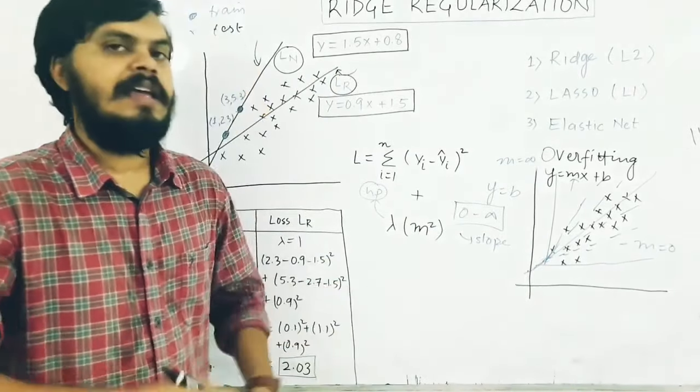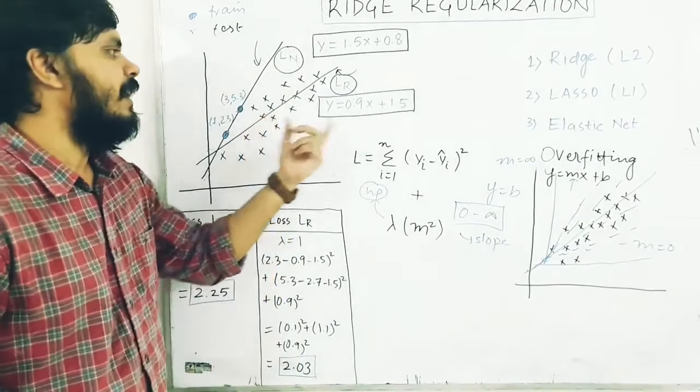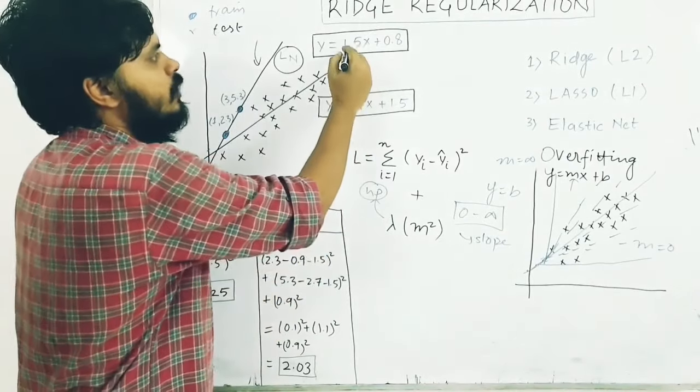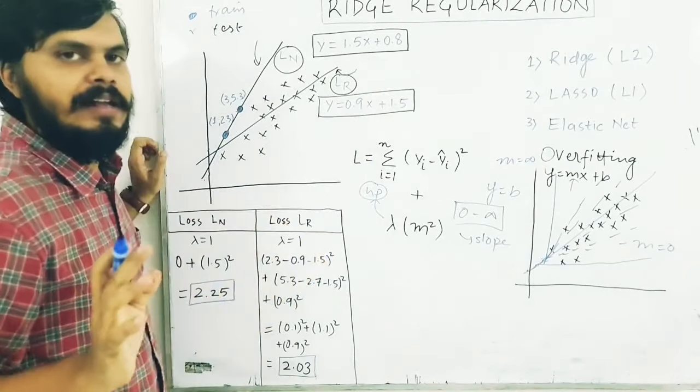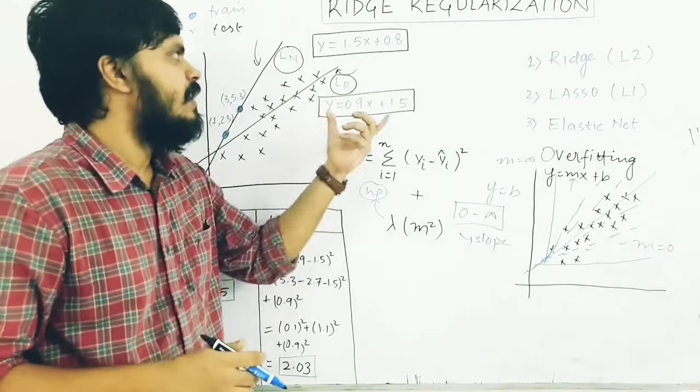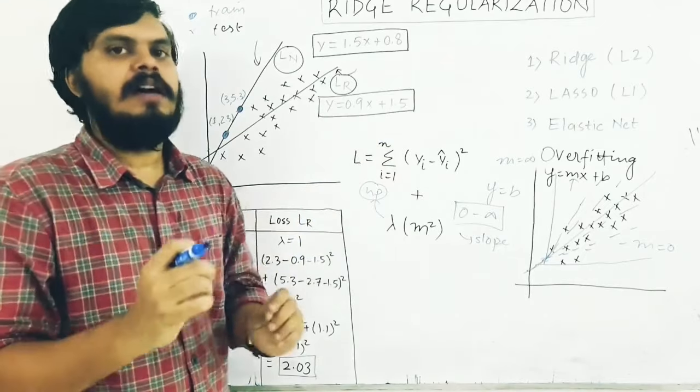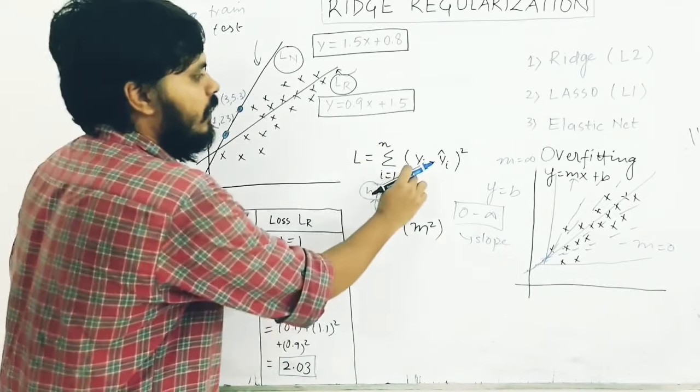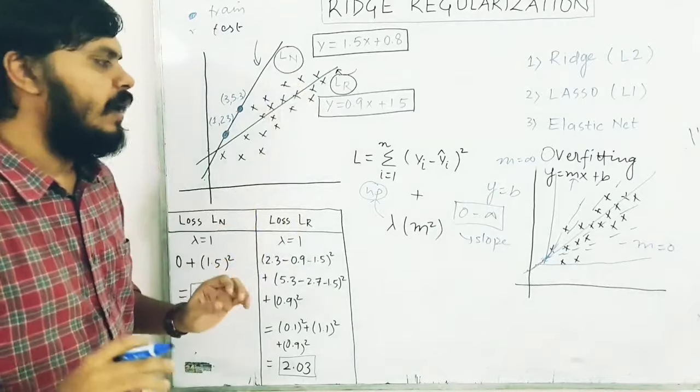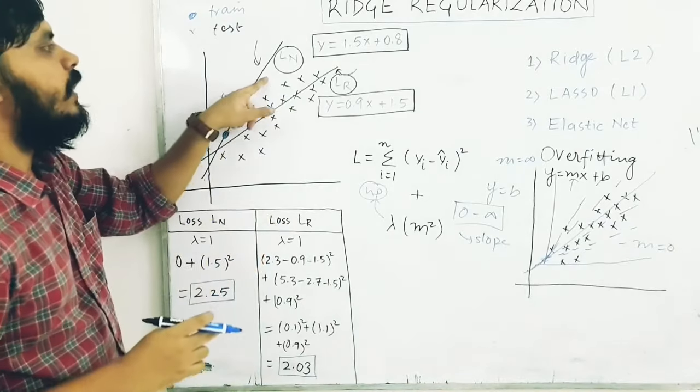Now let's see how this term will convince my machine learning model to not choose this line but the second one. My slope is 1.5 that I am going to try to make smaller. If the slope is less, overfitting will be reduced. I will calculate the loss for both of these lines.